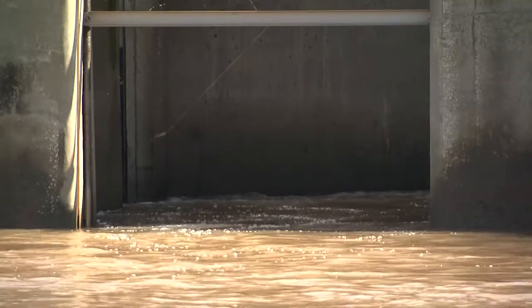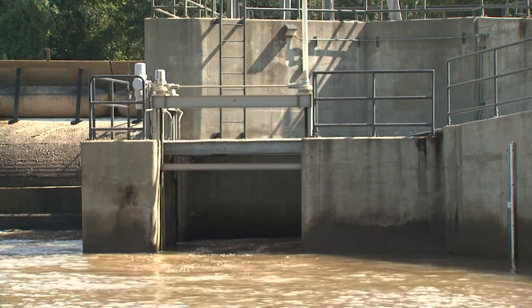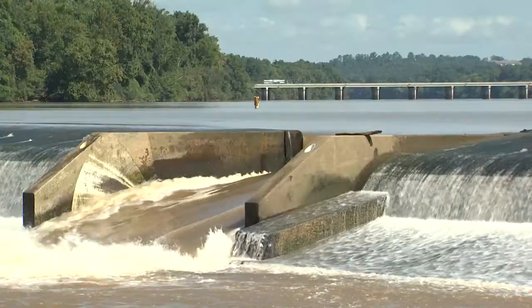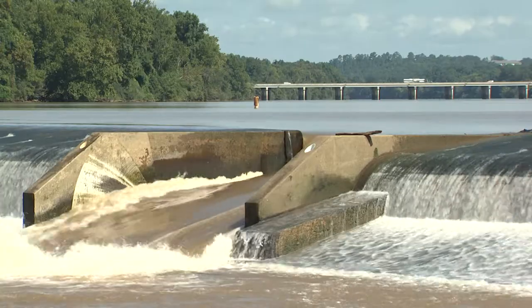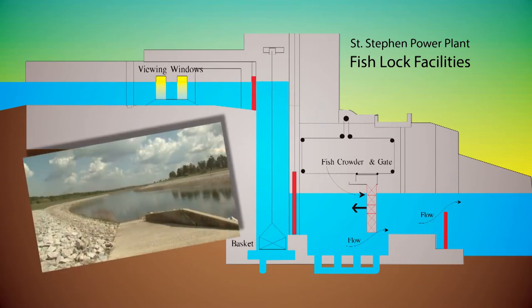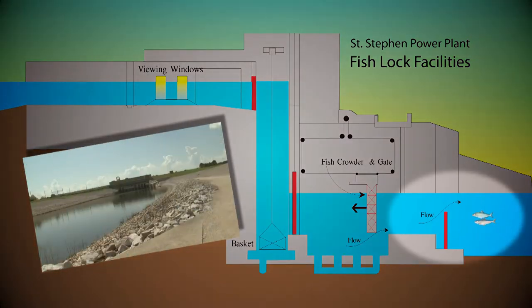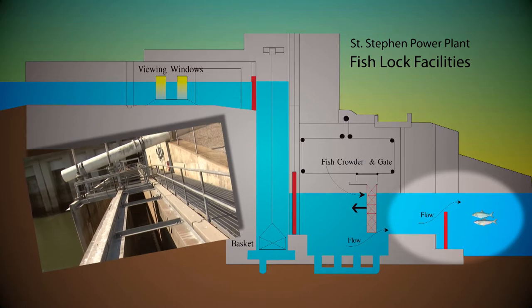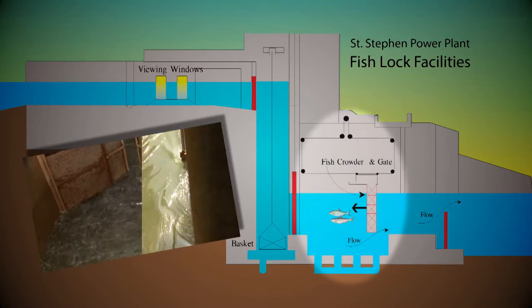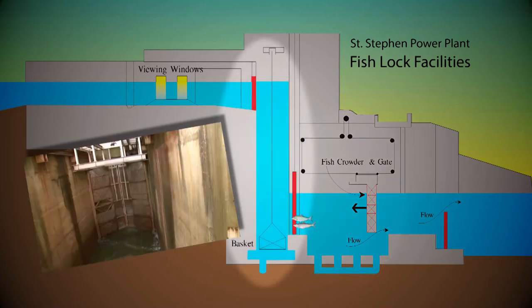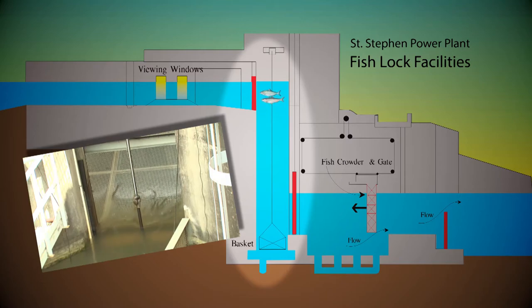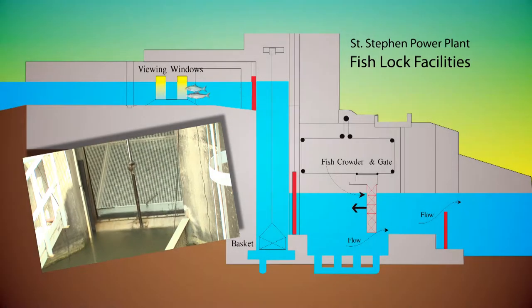Once the fish enters the fishway, it navigates through a number of different ripple pools or different velocities of water in order to reach the exit on the other side. As you can see, the dam here is higher than any low head dam, so in this case we have the fish enter into a chamber and they get locked in, then we fill that chamber with water. A basket comes up underneath them as they rise through the chamber, and then they're released on the top side.